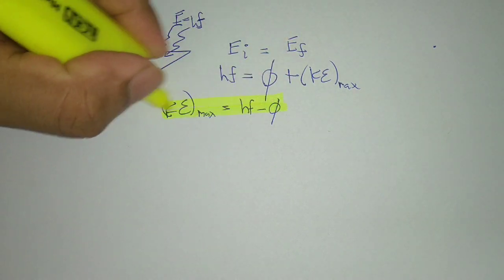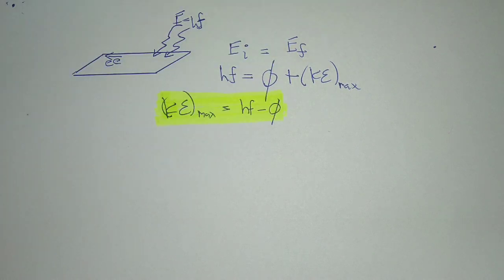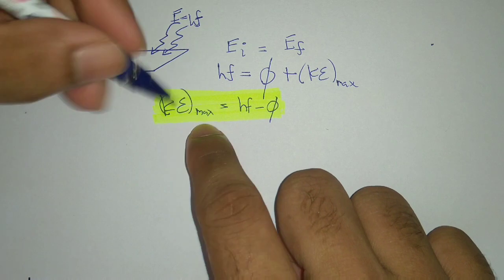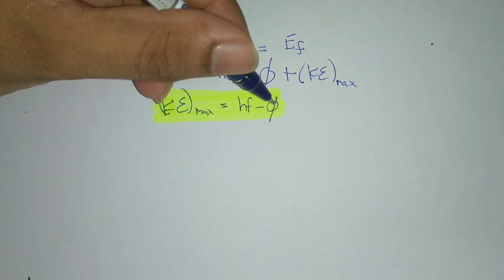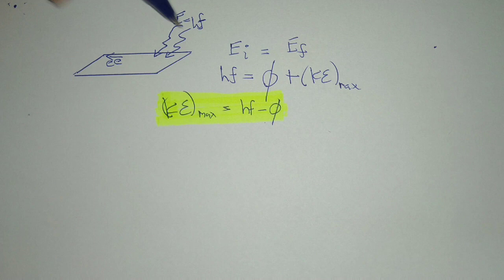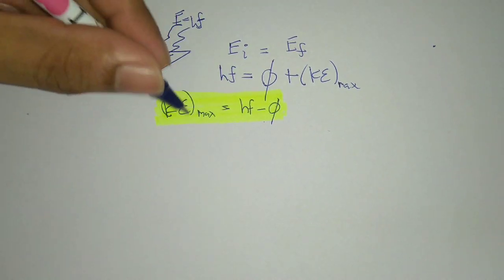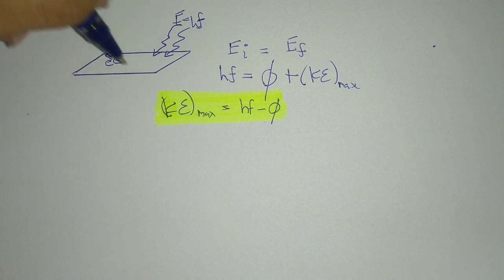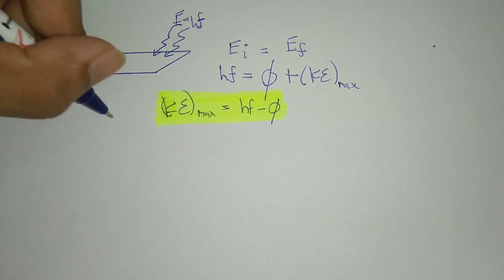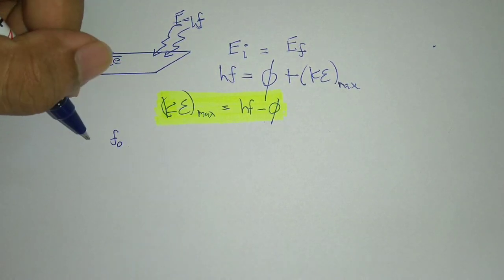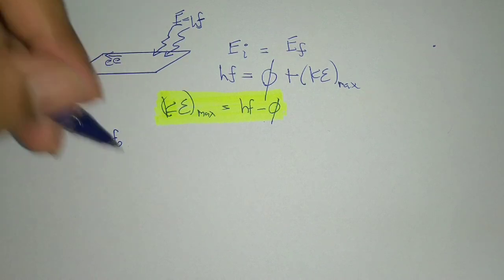So let's take a look at the basic equation of the photoelectric effect. So let's take a look at the making of the electron. So let's take a look at the electron.